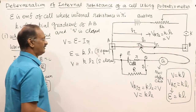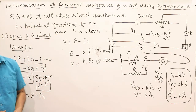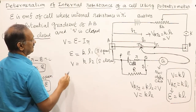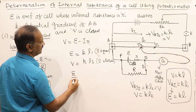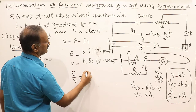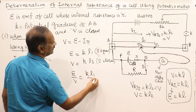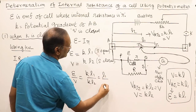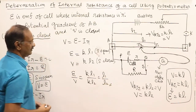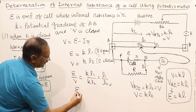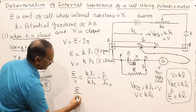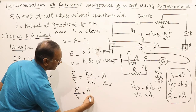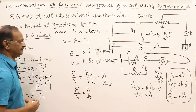Dividing the first equation by the second: EMF divided by terminal potential equals (K×L1) divided by (K×L2), which equals L1 divided by L2. So we can say: EMF of the cell divided by its terminal potential equals L1 by L2.